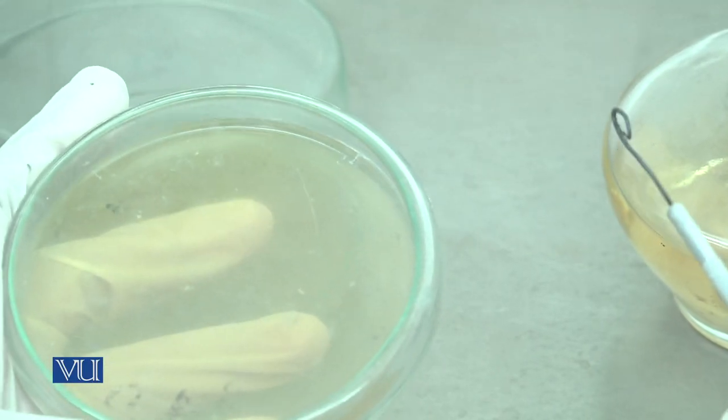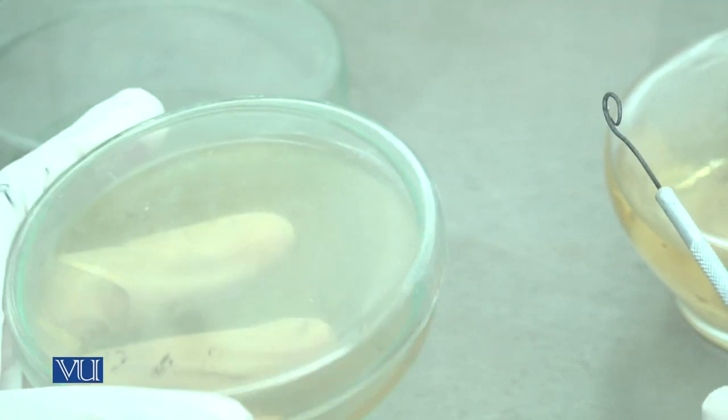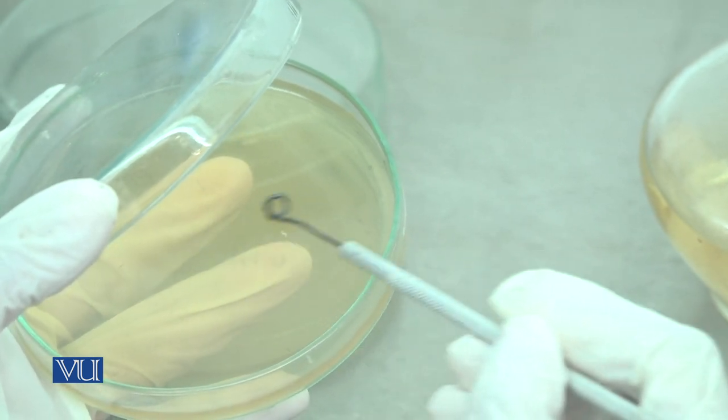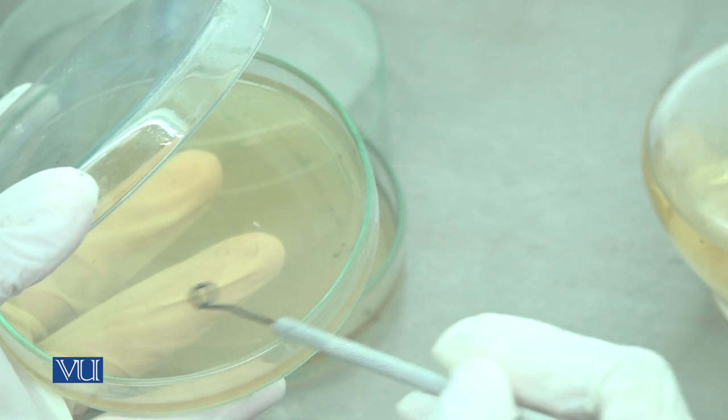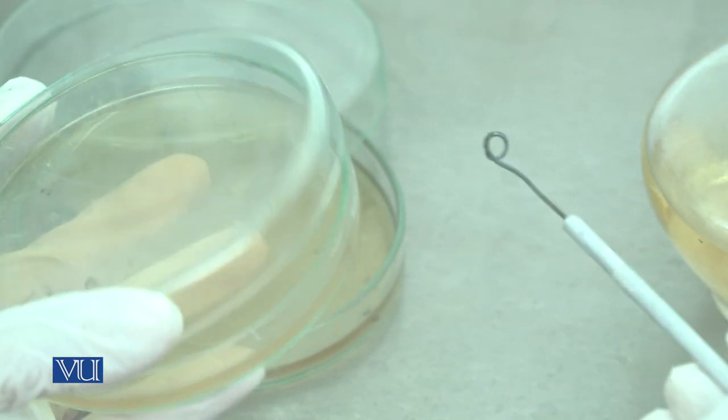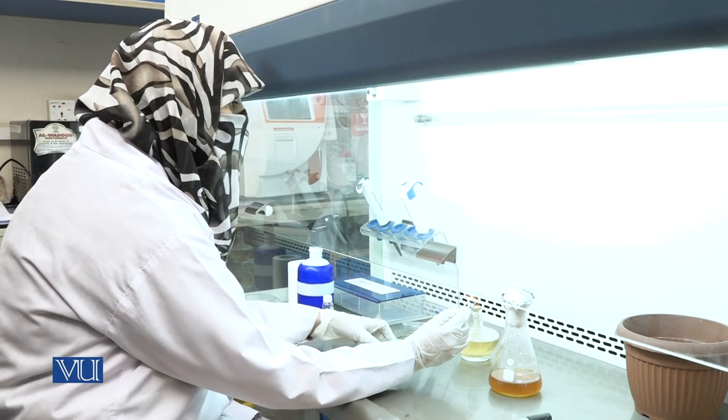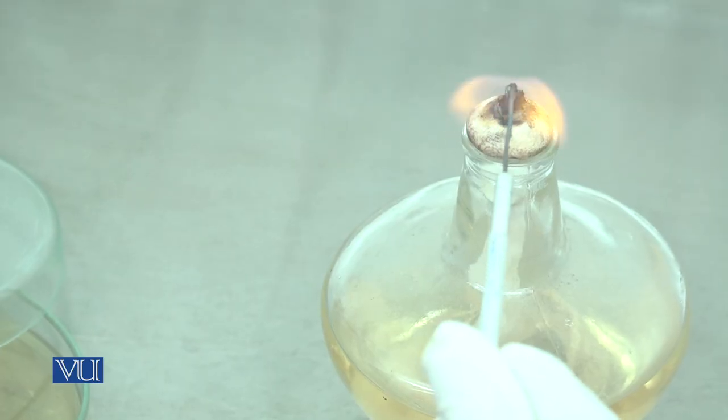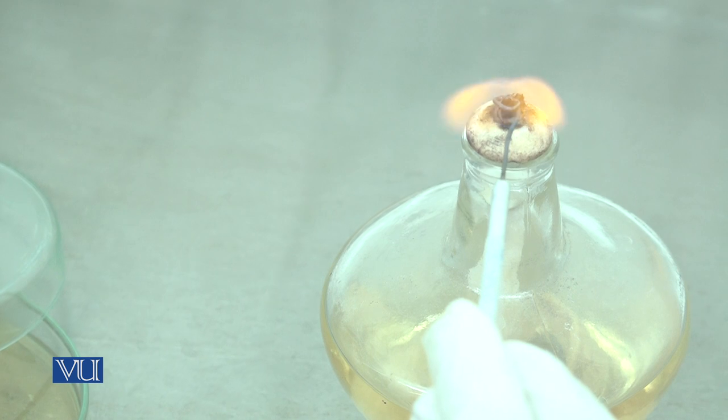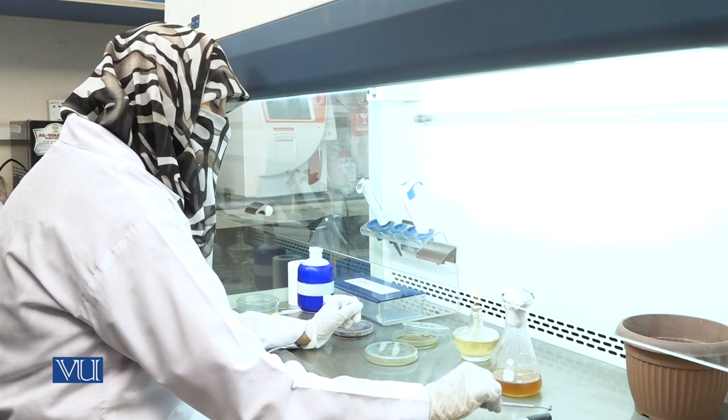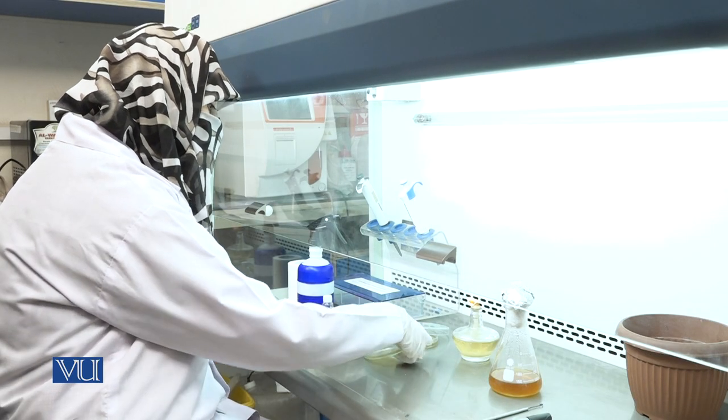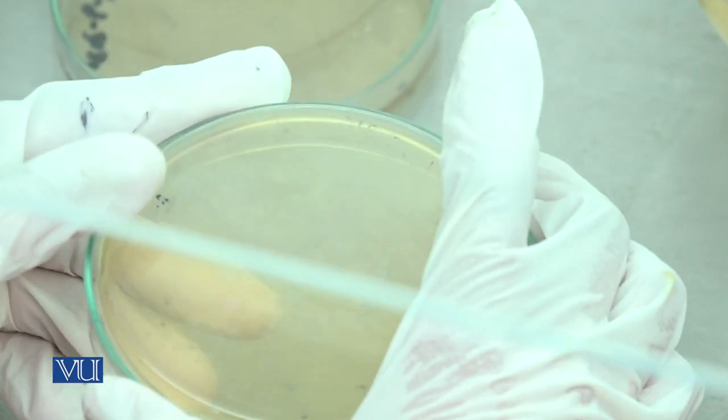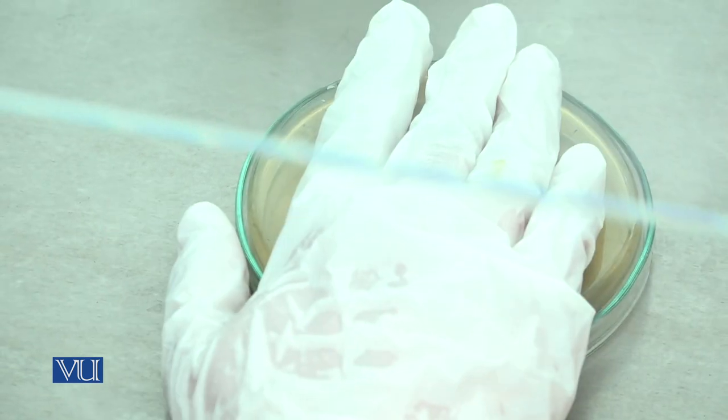Now, streak in a slightly rapid movement to avoid gouging the agar plate. After inoculation, again red hot the loop. Now, place the inoculated plates in an incubator in inverted position at 37 degrees centigrade for overnight.